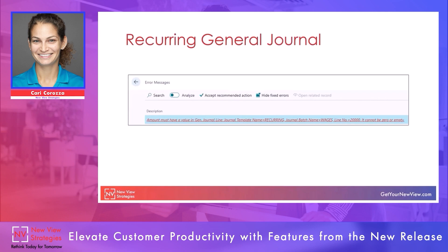Or you could filter that zero dollar line out of view, post the recurring journal, remove the filter, and then make sure that you checked and updated the date on that line so that it matched all of the other lines. That's a lot of additional work, and this often prevented users from utilizing recurring journals — or they may just use a general journal instead.